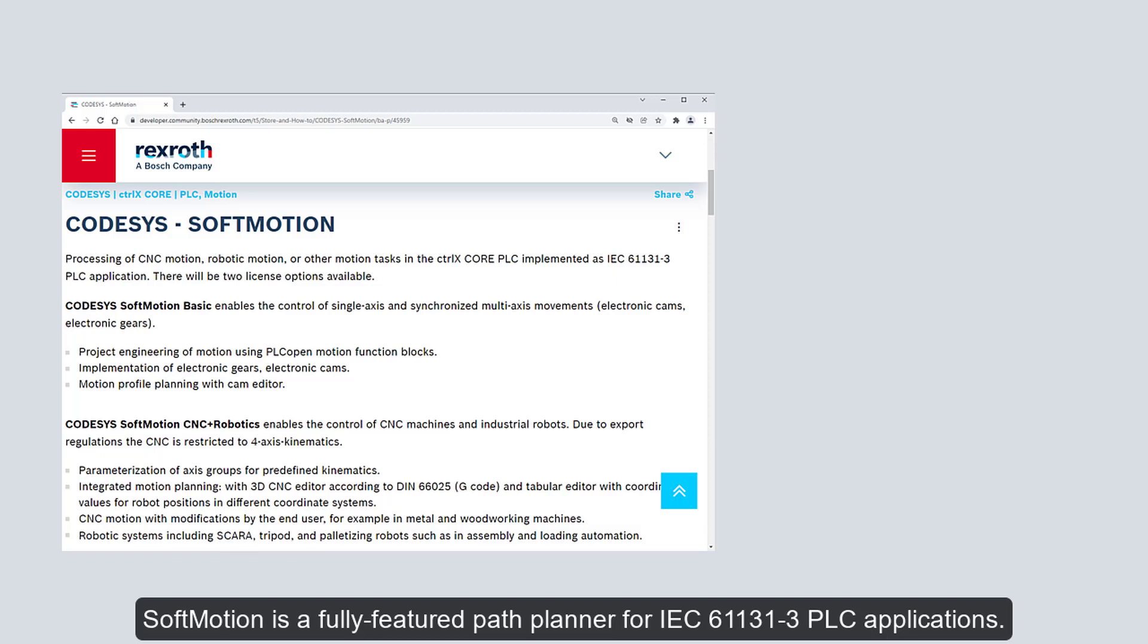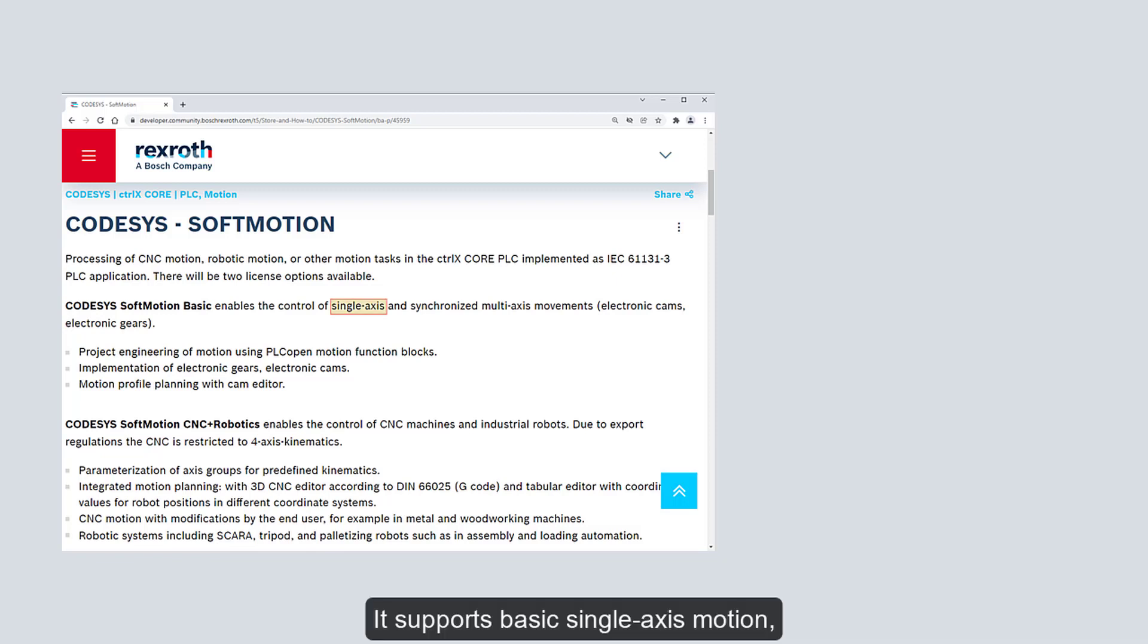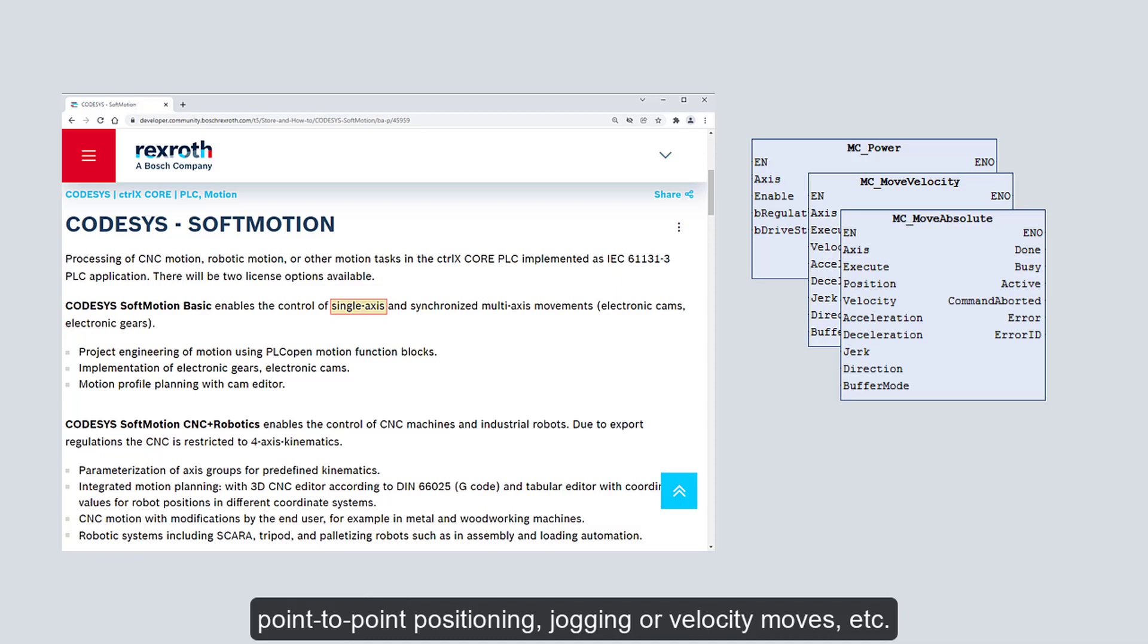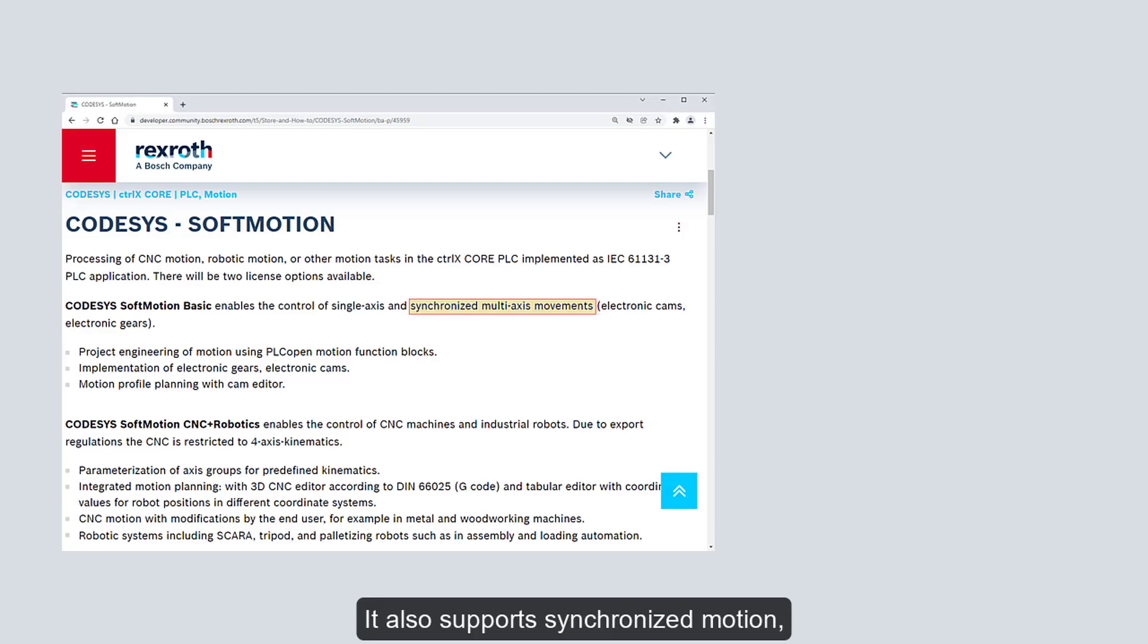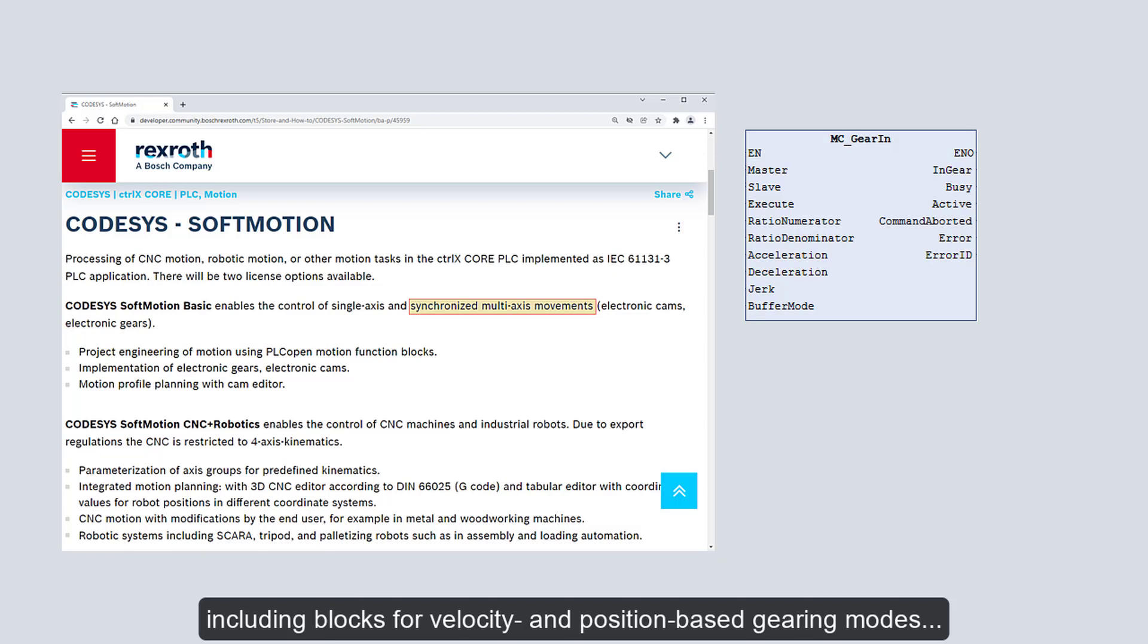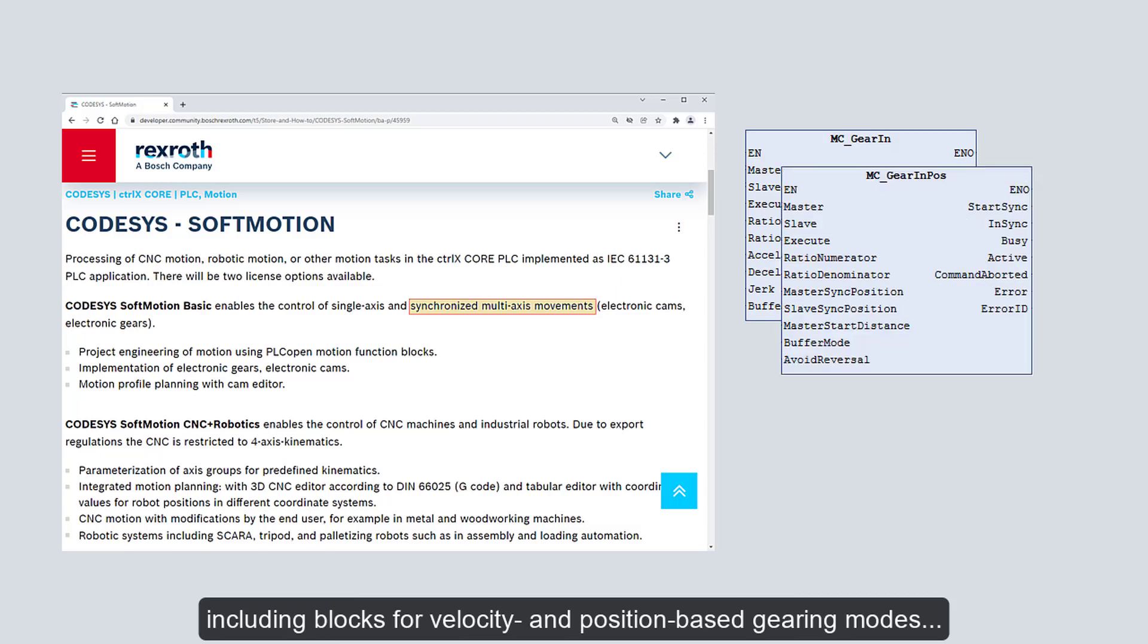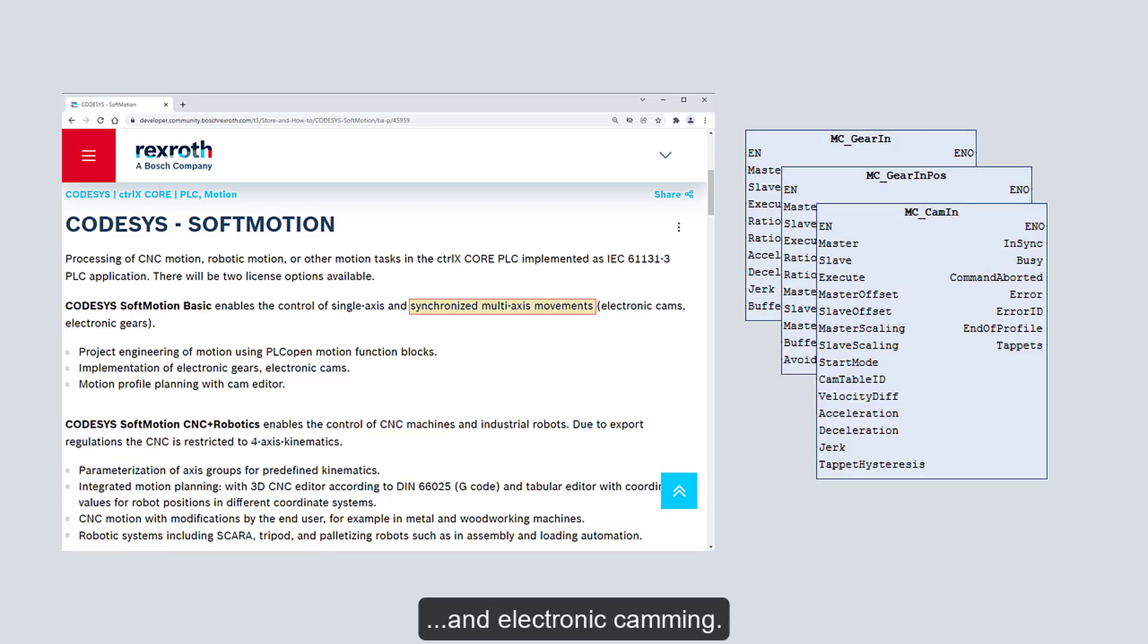SoftMotion is a fully-featured path planner for IEC 61131-3 PLC applications. It supports basic single-axis motion with blocks for enabling axis power, point-to-point positioning, jogging, or velocity moves. It also supports synchronized motion, including blocks for velocity and position-based gearing modes, and electronic camming.